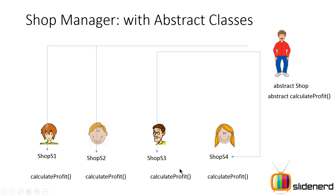The whole idea behind making Shop abstract was to give a uniform approach — having the same method calculateProfit implemented in different ways across all the shops. Shop acts as a super class for everyone, and calculateProfit identifies what is common among all the shops. If you've seen the polymorphism videos on my playlist, you'll notice this looks very similar — and yes, abstract classes are just another way of showing polymorphism in Java. When you have a problem you want to solve multiple times but a small aspect changes each time, that is when you use abstract classes.